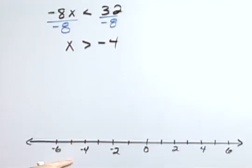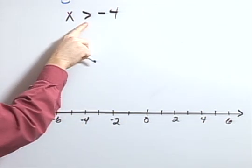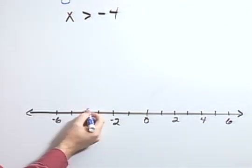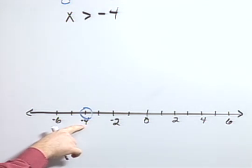Finally, when I go to graph that at negative 4, because it's x is greater than, not greater than or equal to, it's non-inclusive, so I'm going to have an open dot at negative 4.